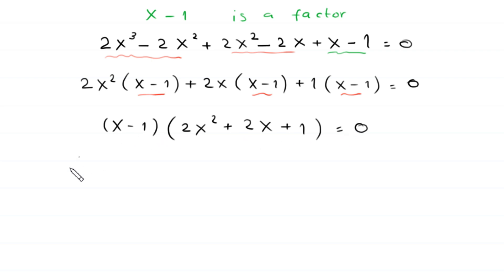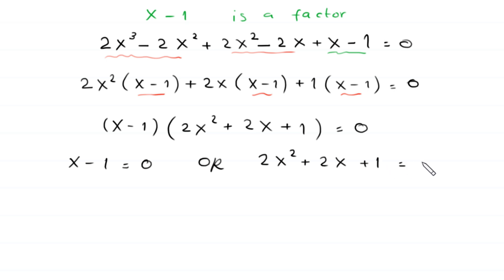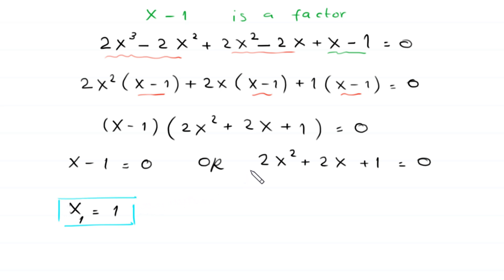From here, either x - 1 = 0 or 2x² + 2x + 1 = 0. From the first equation we get x = 1. This is the first solution. To find the other two solutions we solve this quadratic equation. It is not factorable, so we use the quadratic formula. Here a = 2, b = 2, and c = 1.